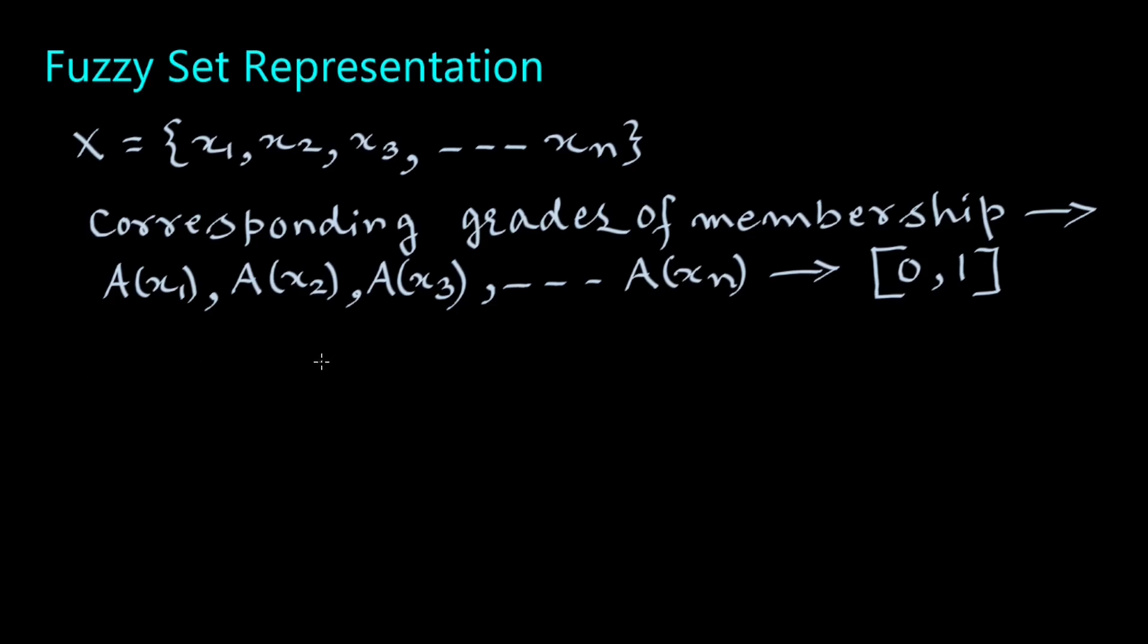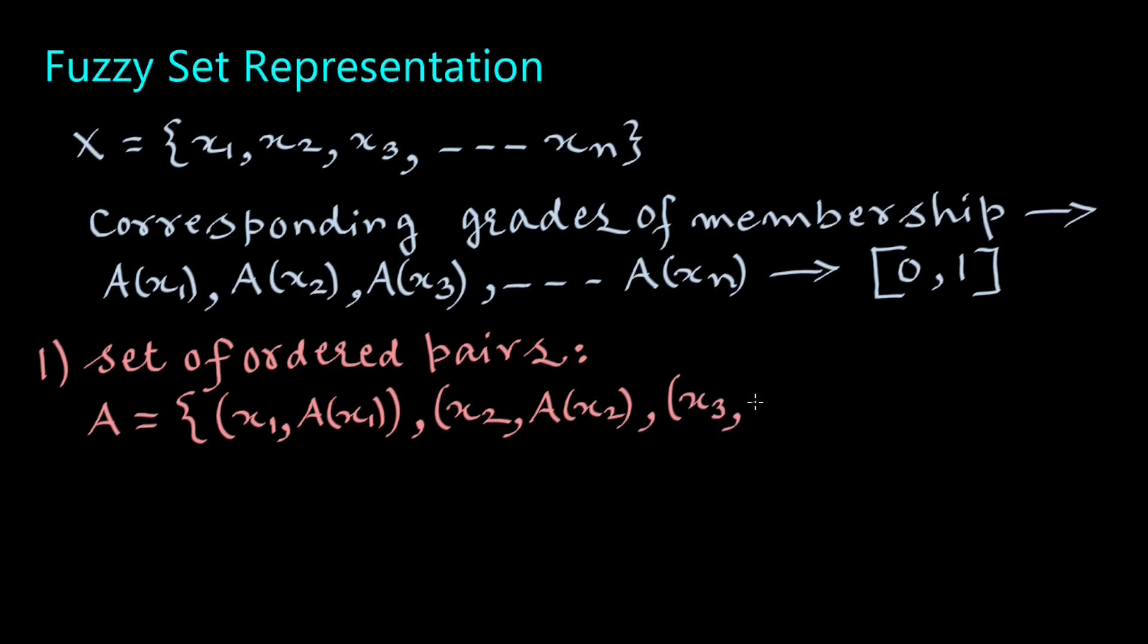Then fuzzy set A can be represented either as a set of ordered pairs: A equals {(X1, A(X1)), (X2, A(X2)), (X3, A(X3)), etc. (Xn, A(Xn))}.